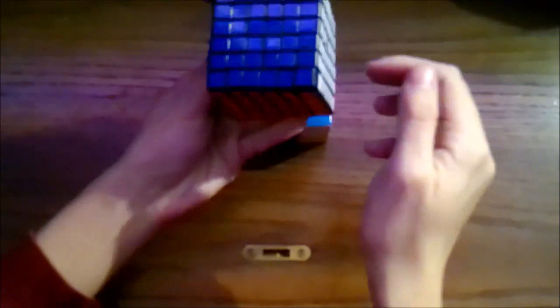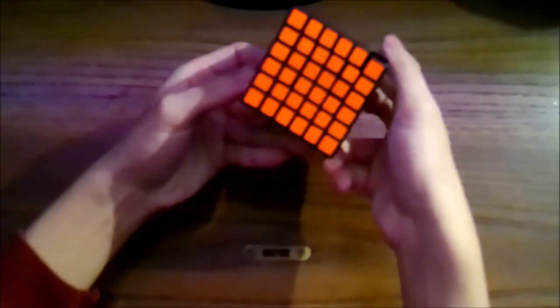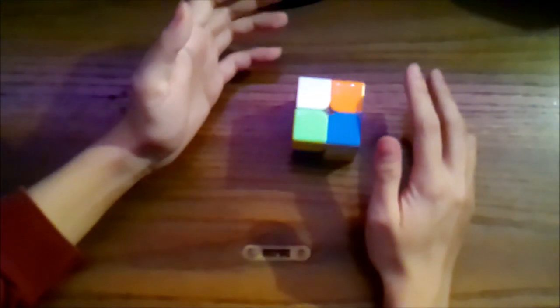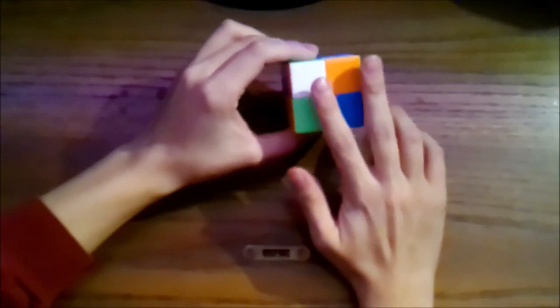White, yellow, green, blue, red, and orange. The goal of this puzzle is to get all the stickers on each side of the cube to match in color.